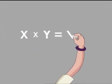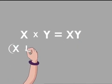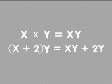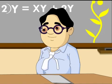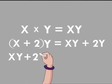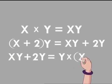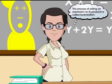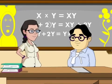Just like in math — if you multiply x·y and (x+2)·y you get different results. For instance, x·y + 2y is the product in the second case. If you are given the product x·y + 2y, you can express it back to its factors: y and (x+2). This process of writing an expression as its products is called factorization.